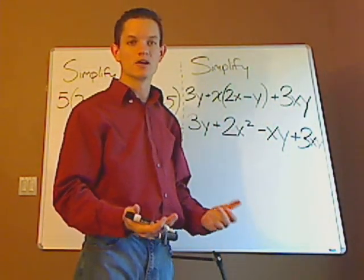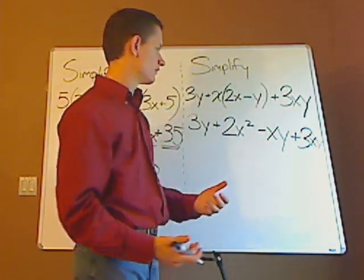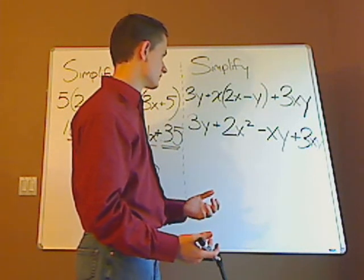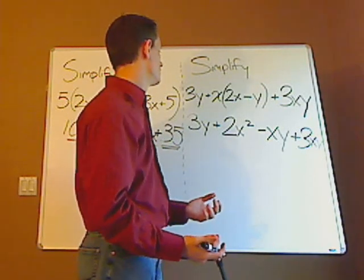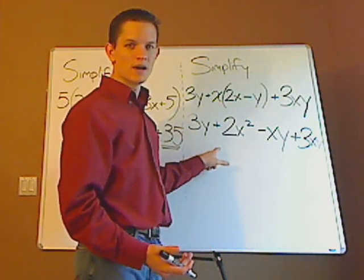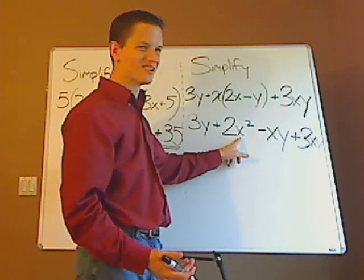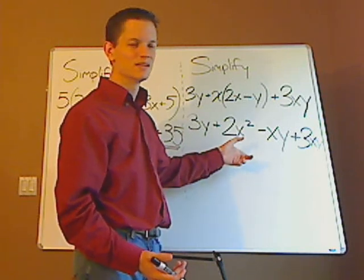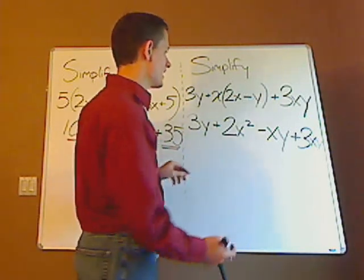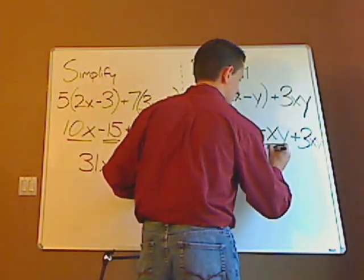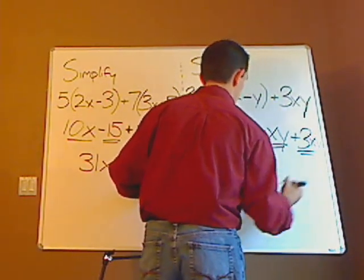So now I add like terms, x's with x's, if there was an x by itself, but there's not. Is there a y by itself? Another y by itself? No. Is there another x squared somewhere here? No. All I have is this and this.